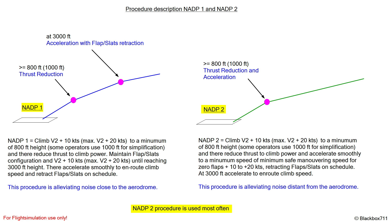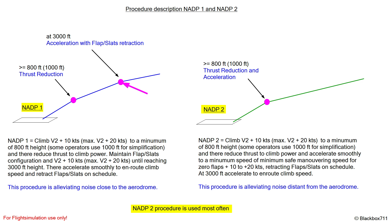However, you do still maintain the initial climb speed — V2 plus 10 until V2 plus 20 knots — and then you continue the climb up to 3000 feet height, and that is where the aircraft starts the acceleration phase and will retract flaps and slats.